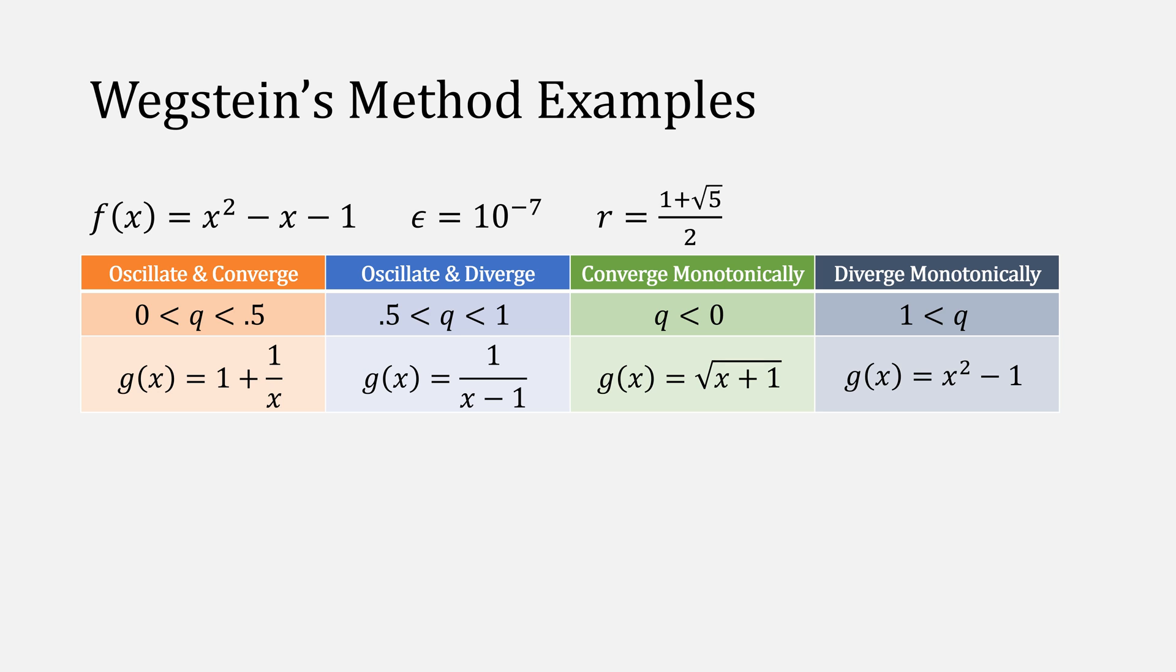Let's look at a few examples of Wegstein's method in action using the original function of x squared minus x minus 1, trying to get to the root of 1 plus square root of 5 over 2, and a stopping epsilon of 10 to the minus 7. We're going to evaluate all four cases of different versions of g of x to show how Wegstein's method works.